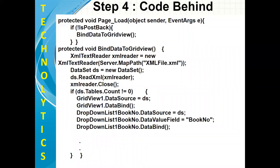Step four: now it's time to write the code in the code-behind class. In the page load, I have written one if condition — if not IsPostBack. So if it is not a post-back, then I am calling one user-defined method: BindDataToGridView. Just below this page load event, we have defined this method BindDataToGridView. Let me explain each line. We are using the disconnected environment data connectivity, and for this purpose we are going to make use of a DataSet. First, let's create an object of XMLTextReader class.